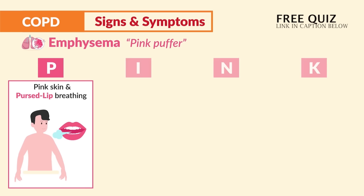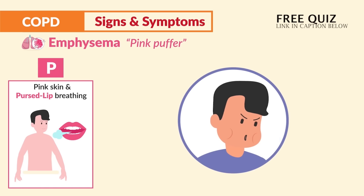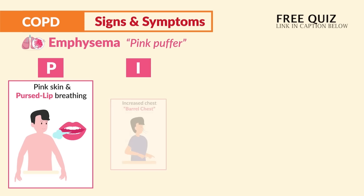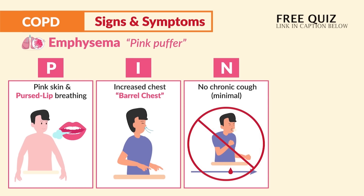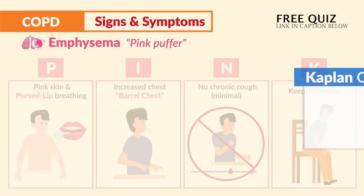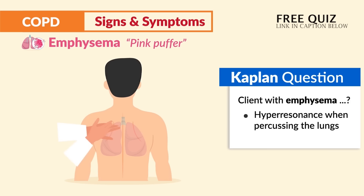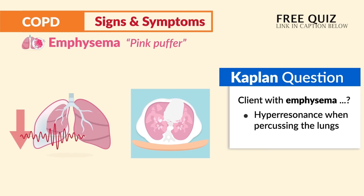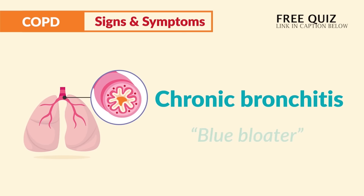For signs and symptoms of emphysema, use the acronym PINK: P is for pink skin and pursed-lip breathing — the earliest sign is huffing and puffing, think puffed-out cheeks and pursed lips. I is for increased chest, known as barrel chest. N is for no chronic cough or very minimal cough. K is for tripoding to get air exchange. Kaplan notes hyper-resonance when percussing the lungs, indicating high air trapping.